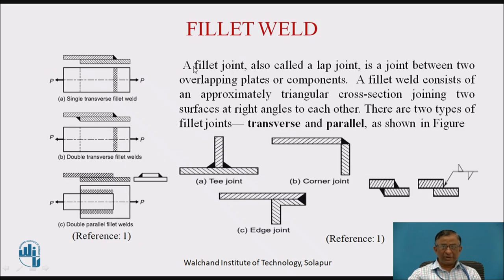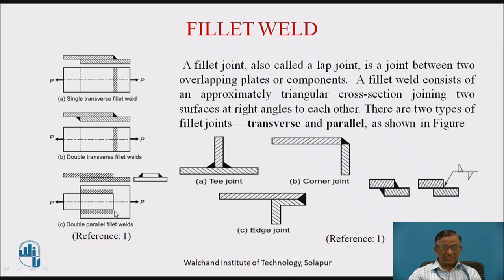The other type of joint is fillet weld. In this case, two overlapping plates are joined by a fillet weld at the corner, which is triangular in section as shown, and symbolically represented as shown. It is further classified as transverse fillet weld and parallel fillet weld. In transverse fillet weld, the weld section is perpendicular to the load acting on the joint. A single transverse fillet weld on one side becomes a double transverse fillet weld when applied on both sides.